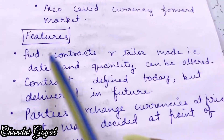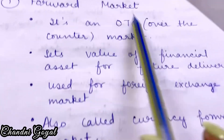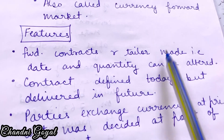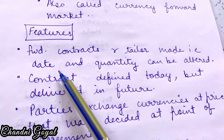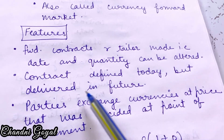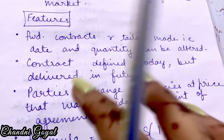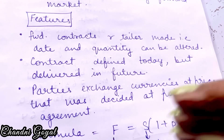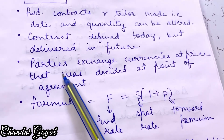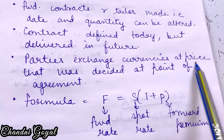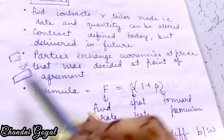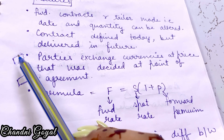Let's look at the features. Forward contracts — the contracts made in the forward market — are tailor-made. Tailor-made means their date and quantity can be altered. The contract is defined today, but delivery happens in the future. Parties exchange currencies at the price that was decided at the point of agreement.